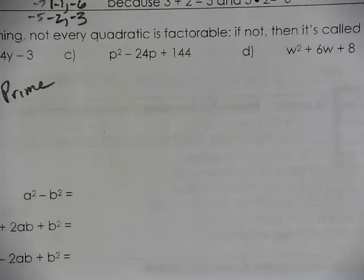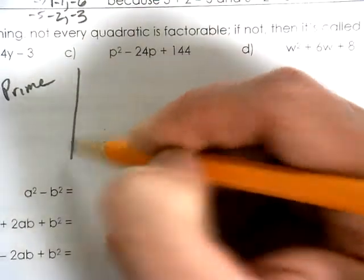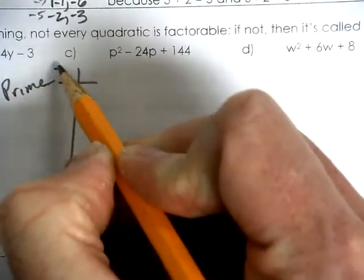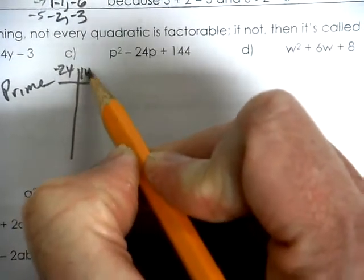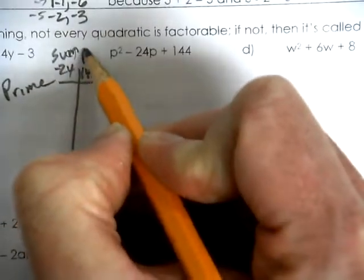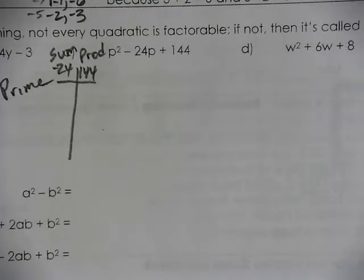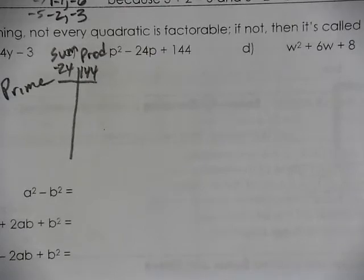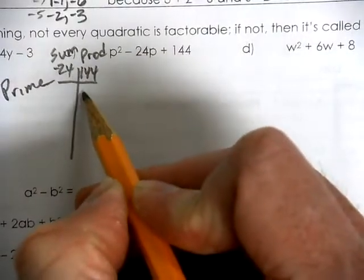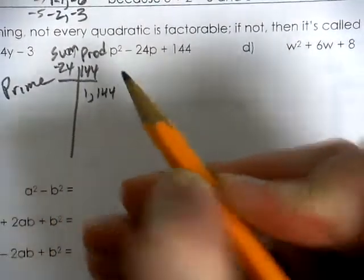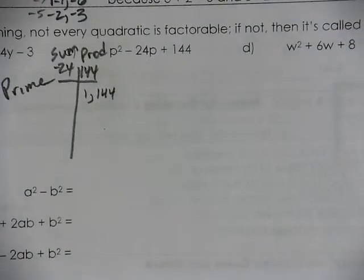So, next we have 144. Well, that's kind of the other extreme. We have negative 24 and we have 144. We're looking for the sum and product. Now, since we're working with the number 144, we probably know what multiplies to be 144. Let's say we know of a very common multiple that makes 144. Now, let's also look at 1 times 144. What if that was a possibility? That does multiply to be 144.